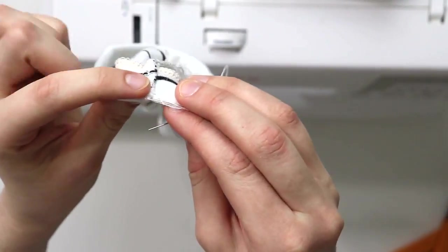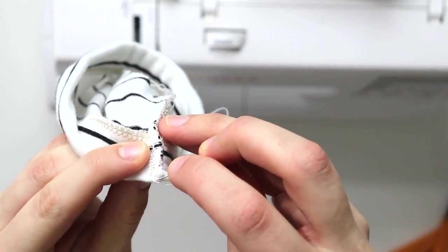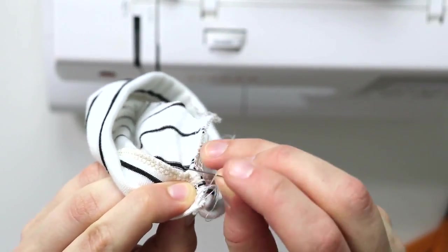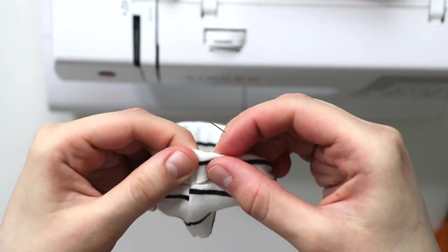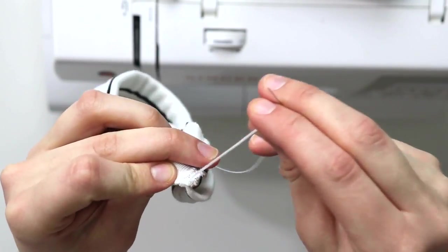After that, to make it super nice and neat, pull those threads backwards onto the wrong side of your project and tie a knot. That will leave a super nice and neat finish, and no loose threads are going to be hanging.